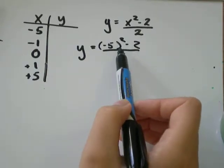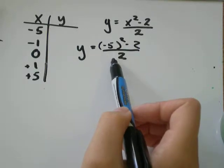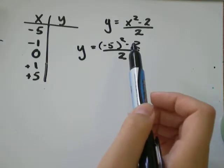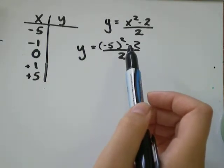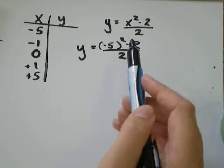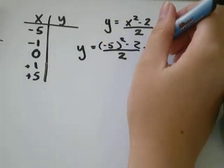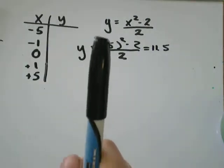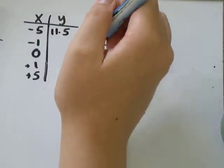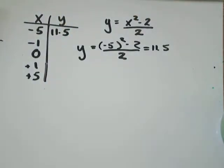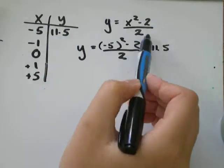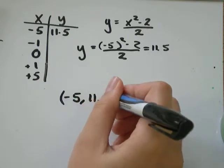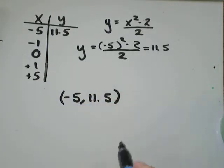So, negative 5 squared, that would be negative 5 times negative 5, which would be positive 25 minus 2, which would be positive 23. And 23 divided by 2 is equal to 11.5. You can leave that as a fraction if you'd rather do that, but I prefer a decimal. So, I'll put 11.5 in my Y column. And what that tells me is there's a point on the equation of that graph that is negative 5 and 11.5.